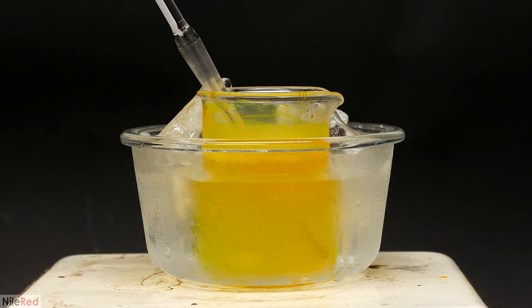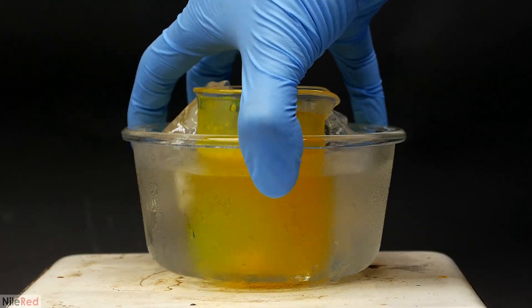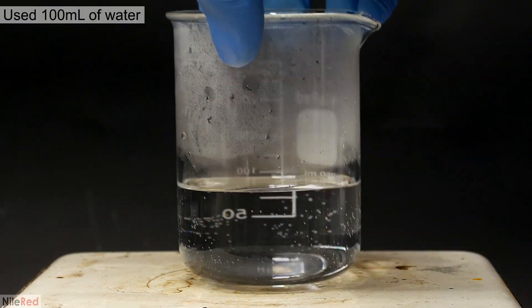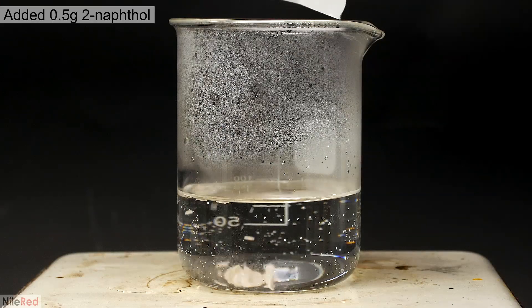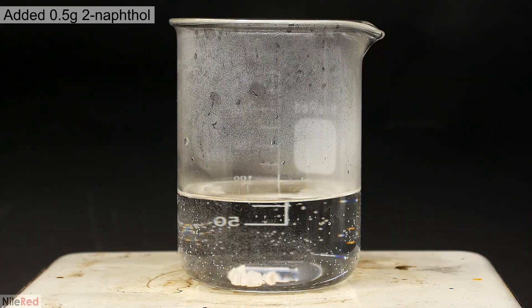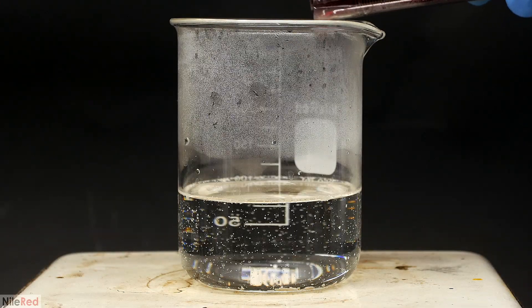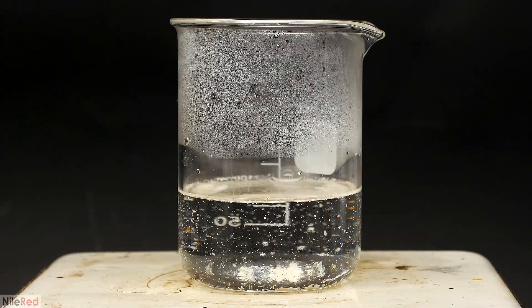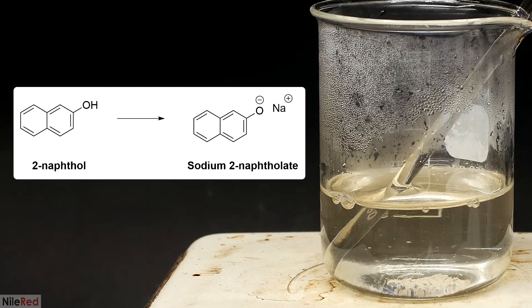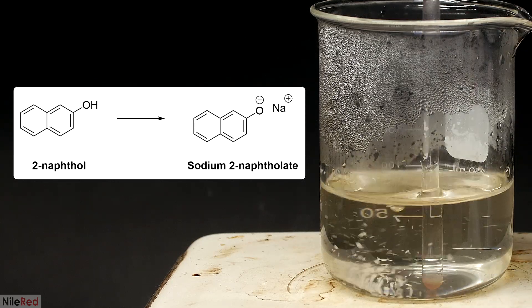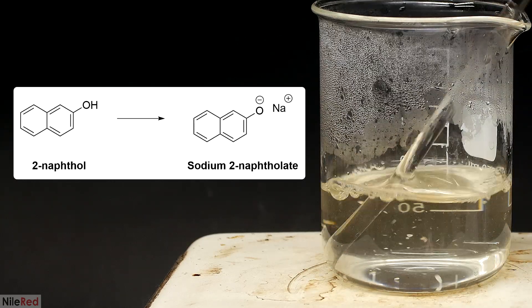To make the dye, I need to couple it to something else, and in the case of Para Red, this other chemical is called 2-naphthol. I start with about 100 milliliters of hot water, add a small amount of the 2-naphthol, and then slowly add sodium hydroxide solution until most of it dissolves. What I'm doing here is converting the normally insoluble 2-naphthol into a water-soluble sodium salt.